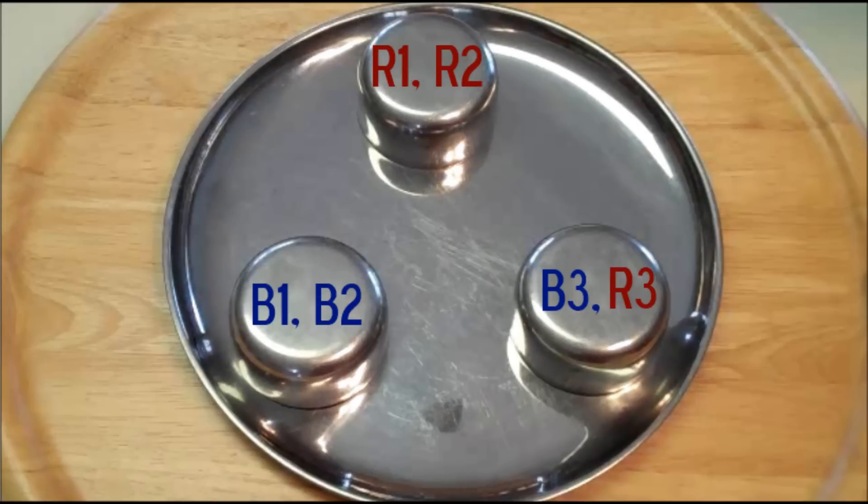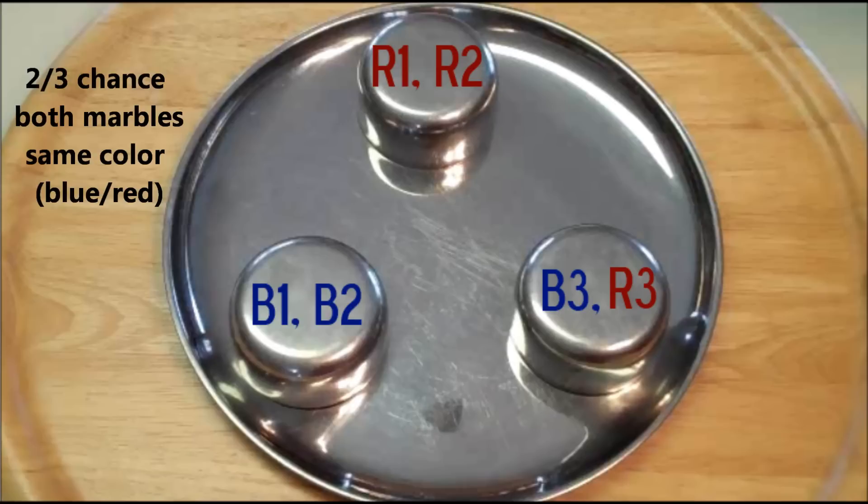At this point, we can label the marbles. There's blue one, blue two, red one, red two, and blue three, red three.